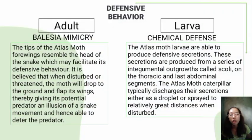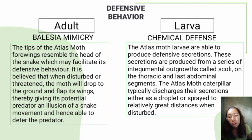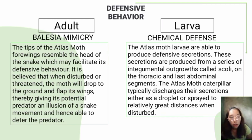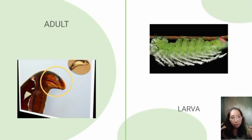The defensive behavior of adult and larva: in the adult, this is called Batesian mimicry. In the larva, there is chemical defense. The tips of the atlas moth forewings resemble the head of a snake — recalling the Cantonese meaning of the moth's name — which facilitates its defensive behavior. When disturbed or threatened, the moth drops to the ground and flaps its wings, giving potential predators the illusion of a snake's movement. In the larva, the chemical defense involves atlas moth larvae producing defensive secretions from a series of integumental outgrowths called scoli on the thoracic and last abdominal segments. The caterpillar typically discharges these secretions either as a droplet or sprayed to a relatively great distance when disturbed.